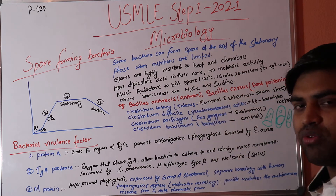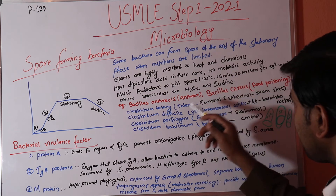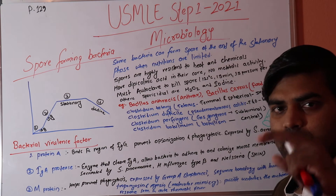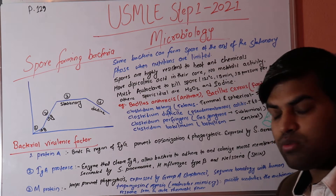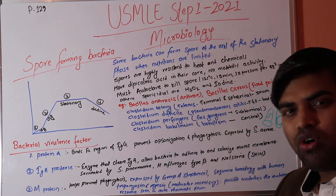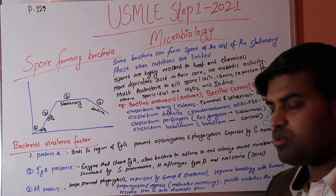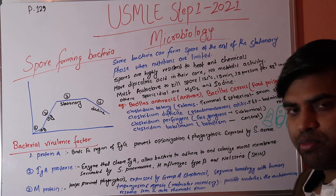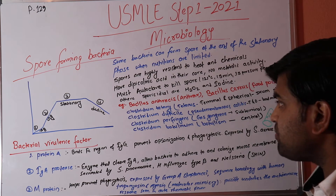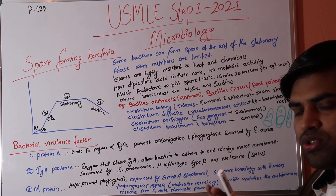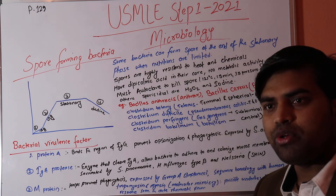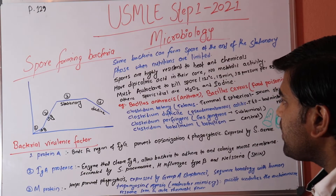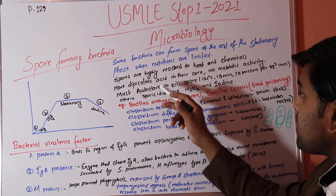To kill spores, autoclaving is required. Autoclave conditions are 121 degrees Celsius at 15 pounds per square inch pressure for 15 to 30 minutes. Autoclaving is the most commonly used sterilization method in hospitals and clinics for surgical instruments and equipment.